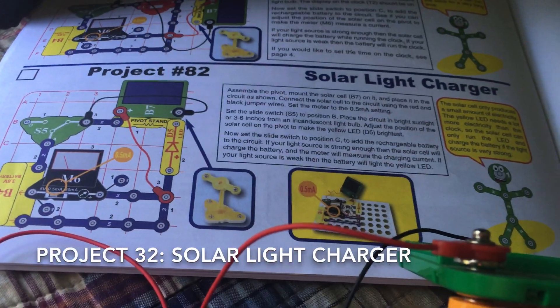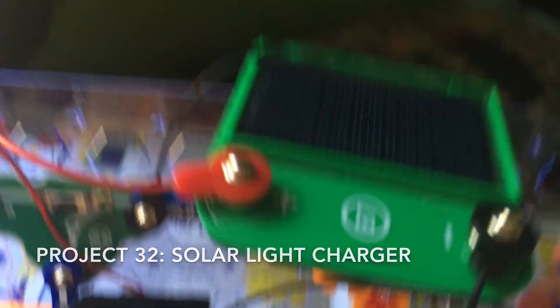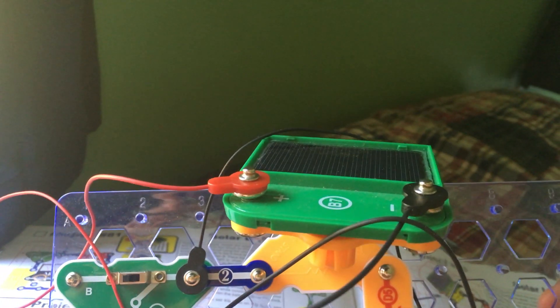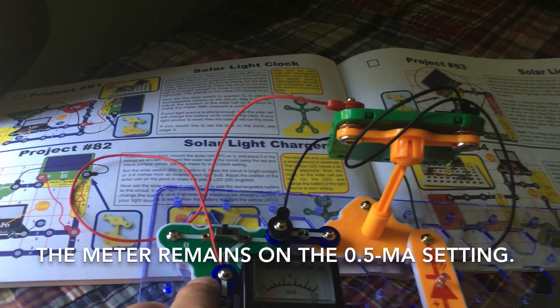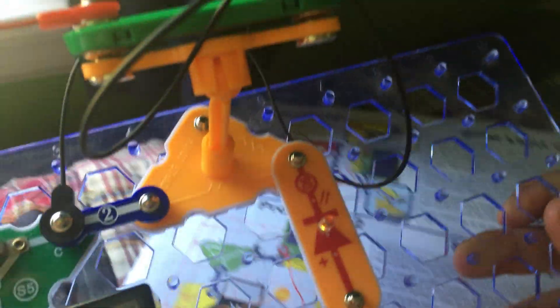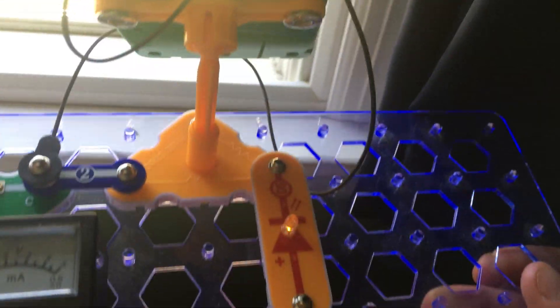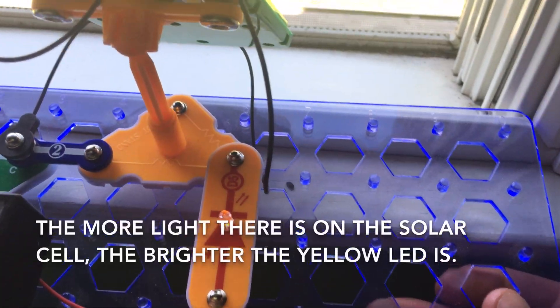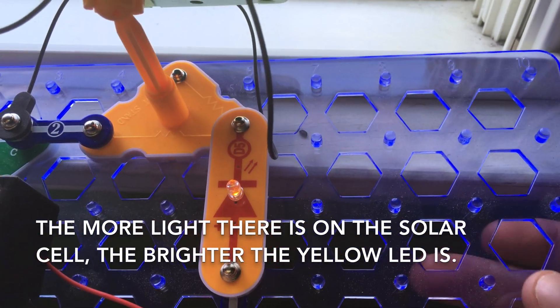The next project is very similar to 81, except now we're using the solar cell and yellow LED. With the switch set to position B, I am going to place the solar cell next to a bright area. And the more light there is on it, the brighter the yellow LED gets.